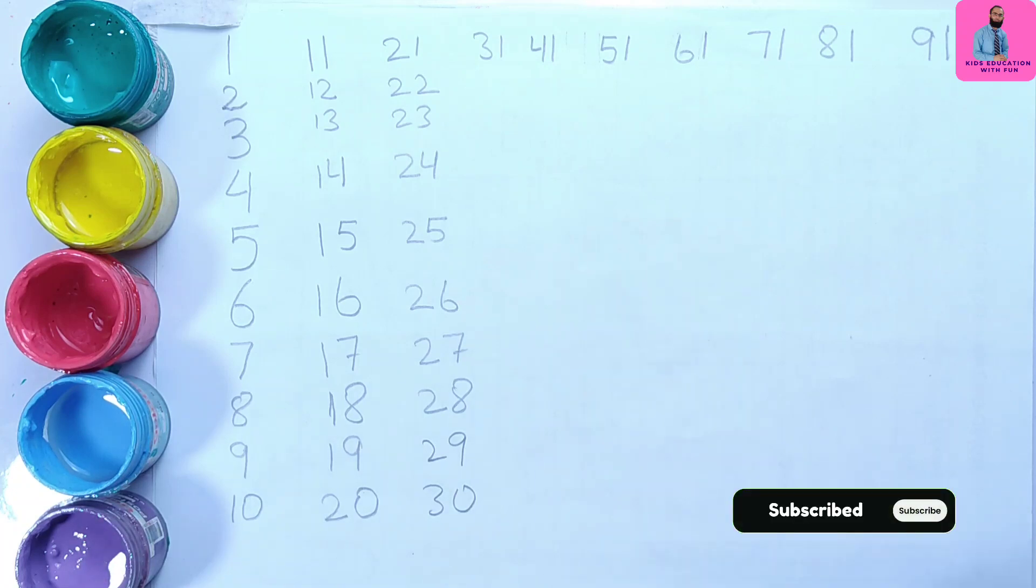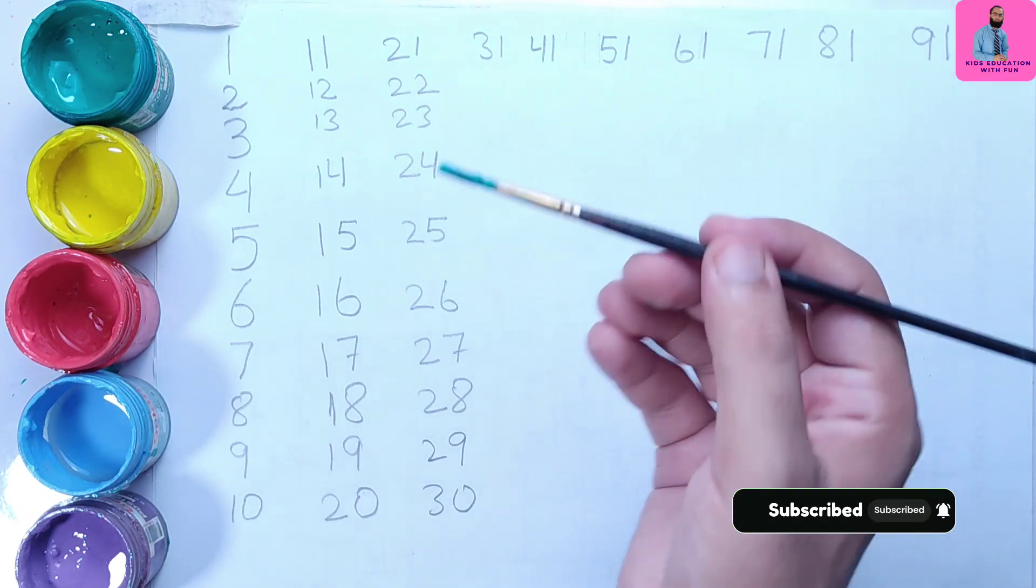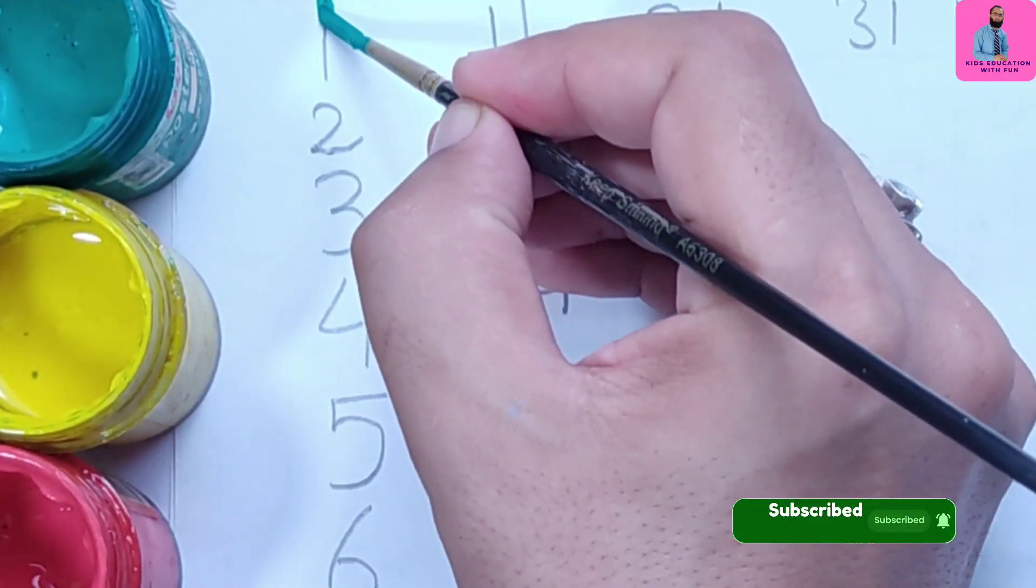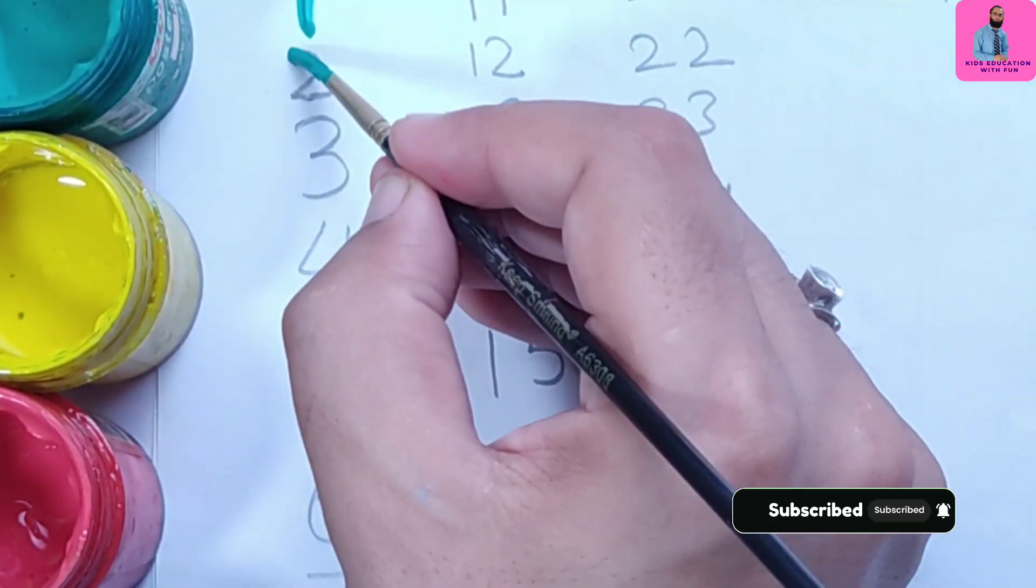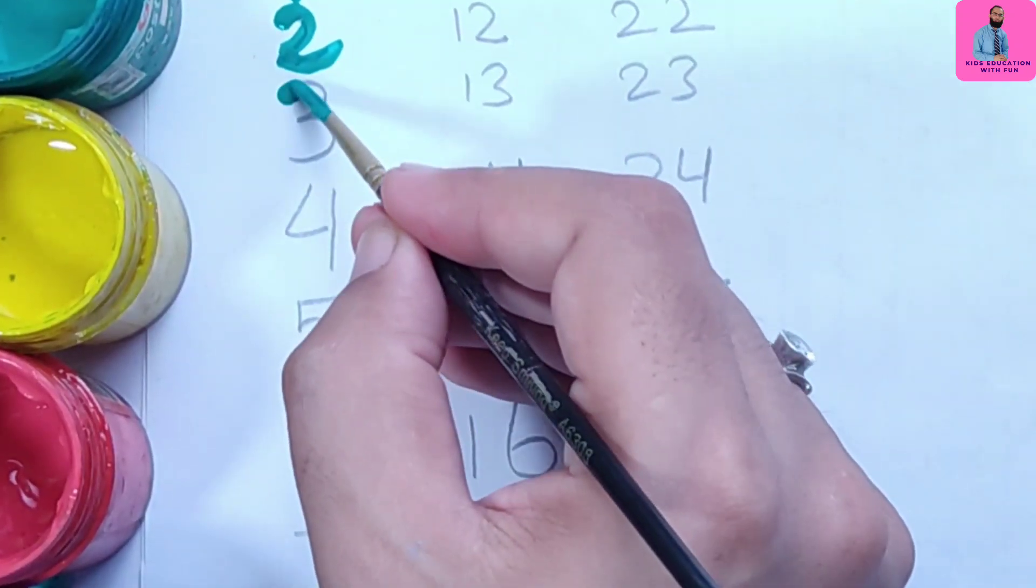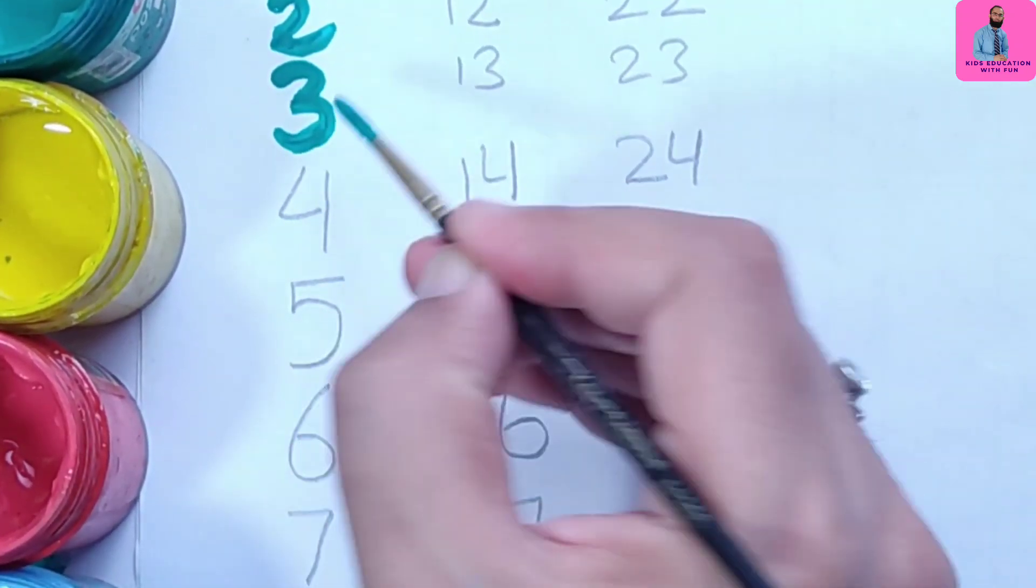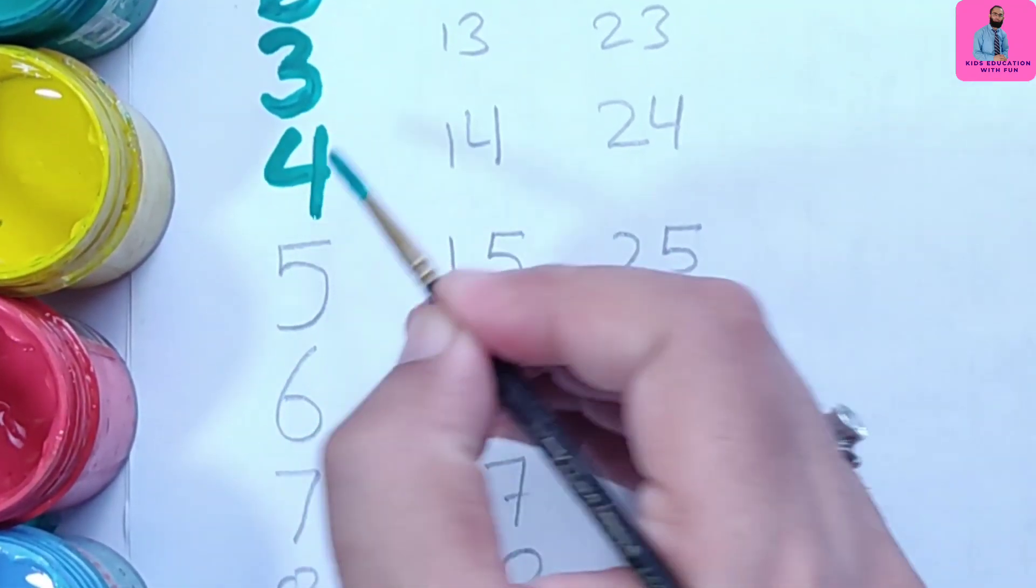So let's start. This is dark green color. 1, number 1, 2, 3, 4.